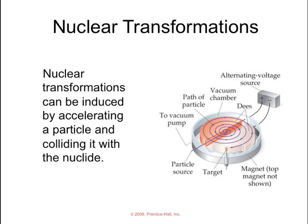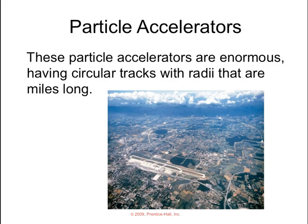Nuclear transformations can be induced so we can make them happen by accelerating a particle and colliding it with a nuclide and that's the particle accelerator some of which are miles long on their track.